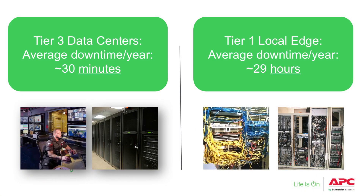And what that ultimately leads to is significantly less availability and more downtime. The average Tier 3 data center experiences roughly 30 minutes of downtime a year, where the typical local edge site experiences about 29 hours annually. And that's actually multiplied many times over, because with a typical Tier 3 data center a corporation might have one, two, maybe three — however, local edge sites could have dozens, hundreds, or thousands. So that downtime difference really understates the actual effect of having a lower-availability local edge deployment.